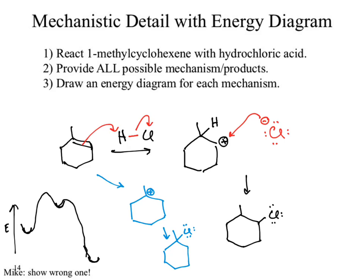What happens with the blue path? Well, I'm still starting at the same reactant. I'm now going to form a carbocation. That carbocation will still be higher in energy than my reactant, but where will it be in comparison to the other intermediate? It should be lower because I'm looking at a tertiary carbocation versus a secondary. So I would expect that to drop a little bit lower. Where should the product be? It should be lower than both blue points.